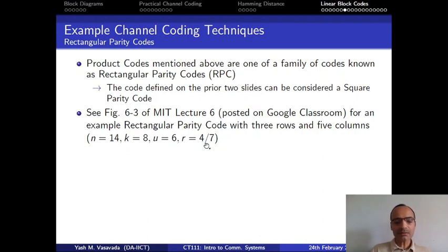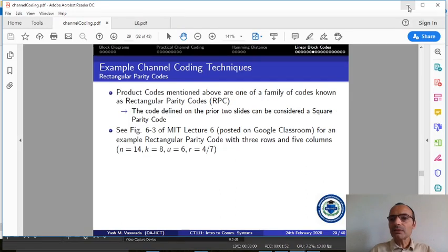So the RPC introduces 6 parity bits and r is therefore 8 divided by 14, which is 4 over 7. Let us take a look at that very quickly.